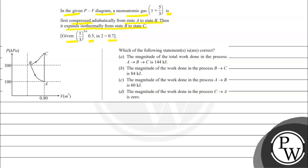The options are: Option A - the magnitude of total work done in the process A to B and B to C is 144 kJ. Option B - the magnitude of work done in process B to C is 84 kJ. Option C - the magnitude of work done in process A to B is 60 kJ. Option D - the magnitude of work done in process C to A is 0. We have to choose the correct option or options.